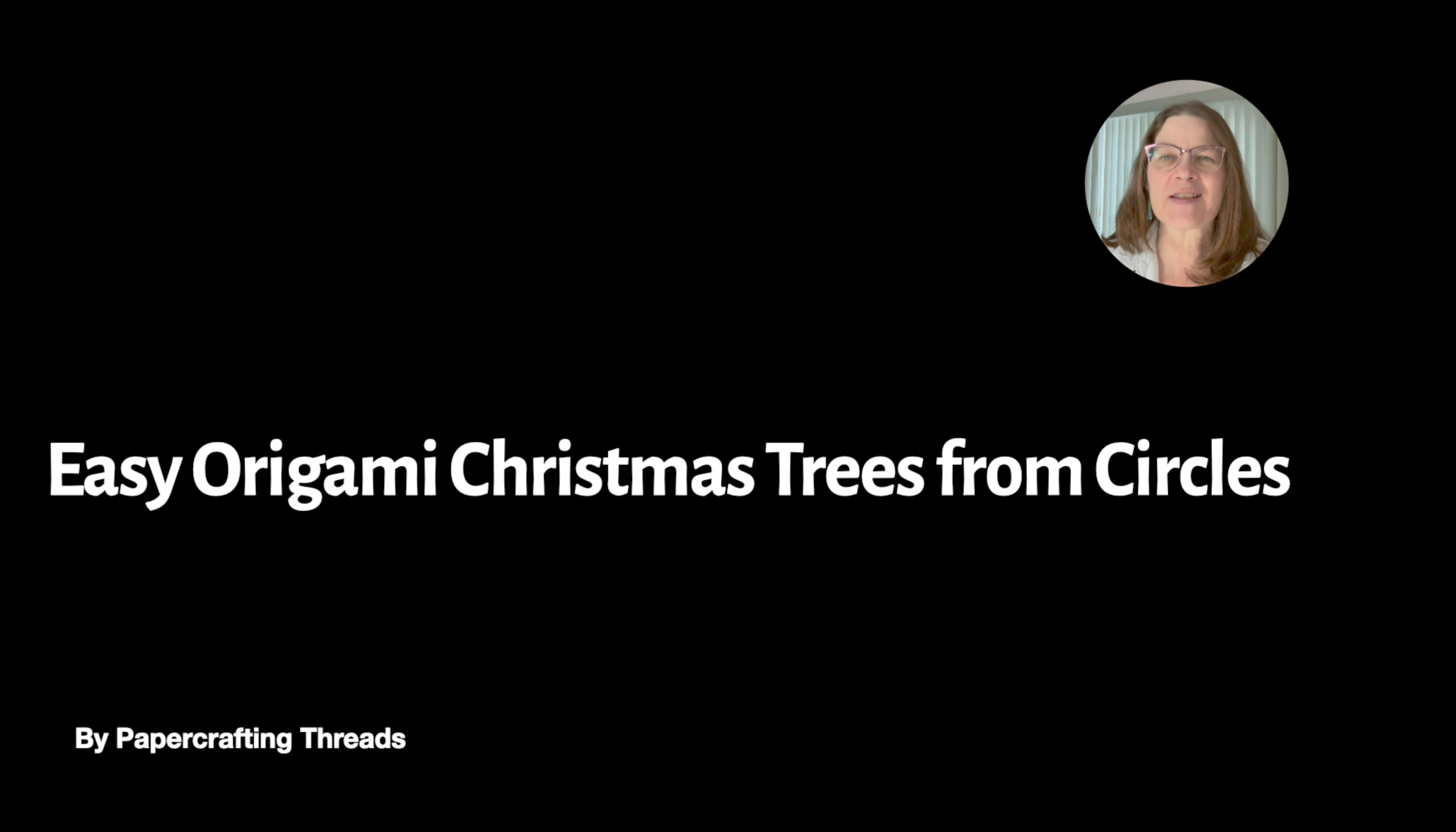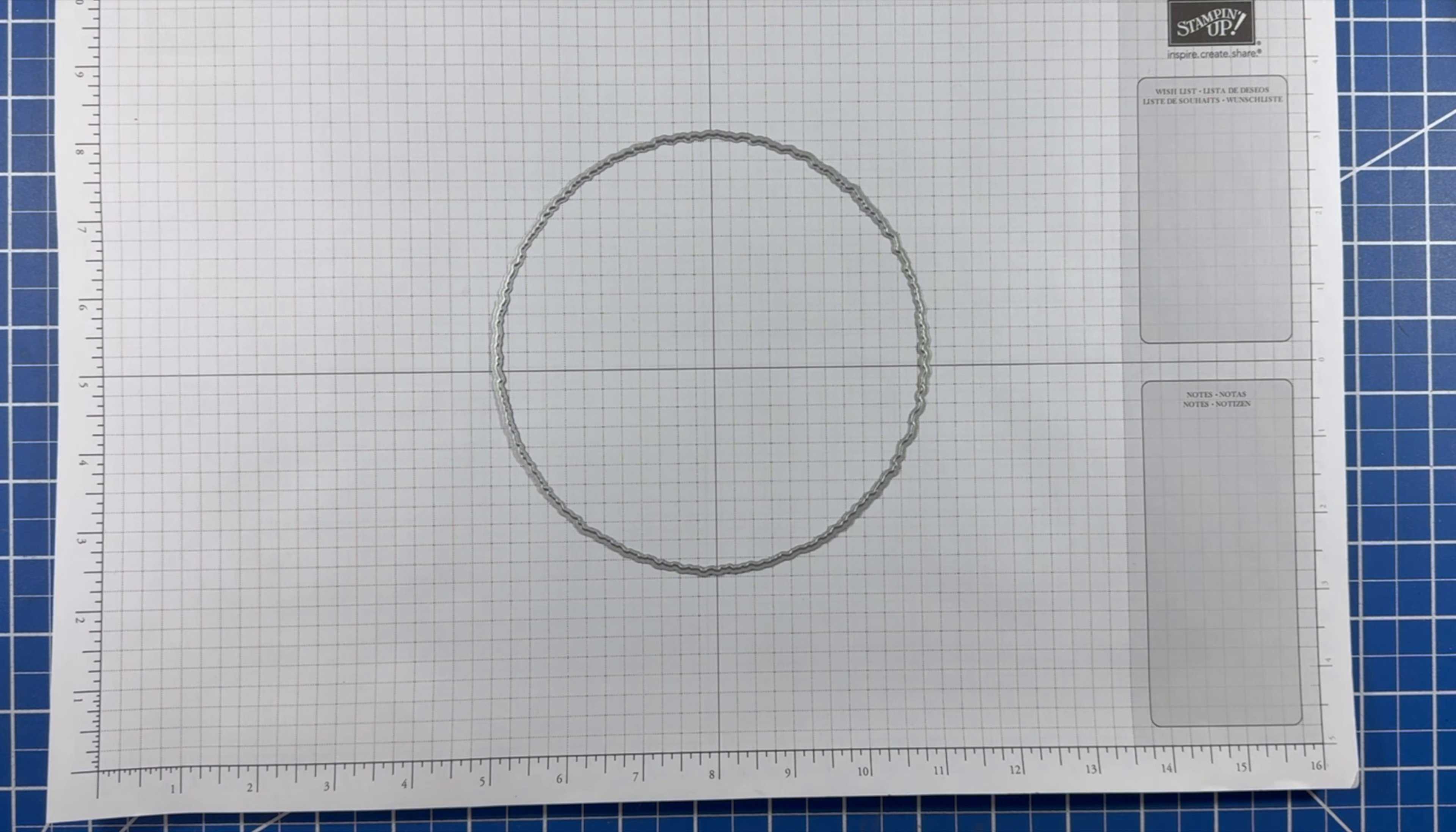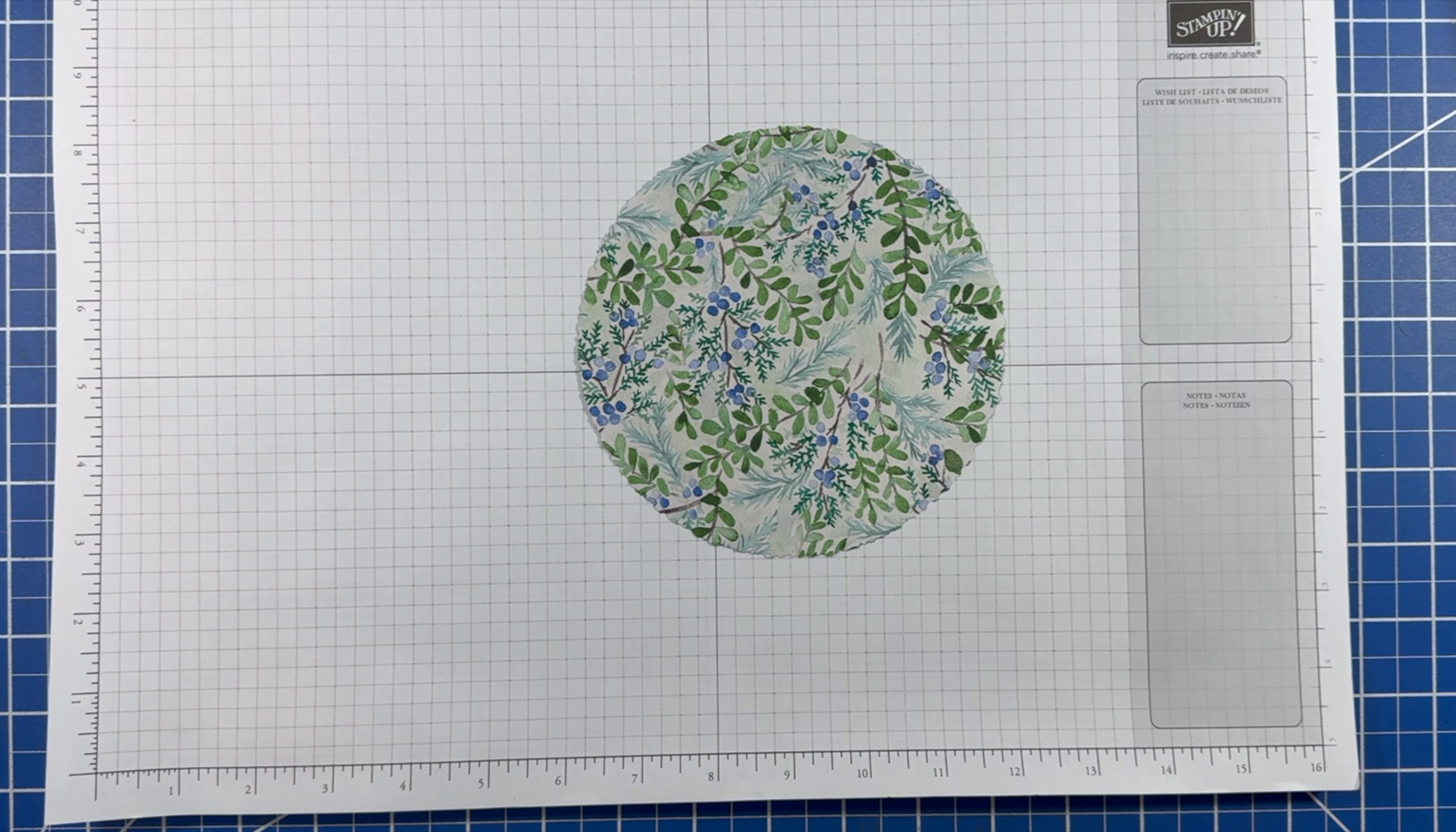I'm using the deckled circle dies to cut my circle. The largest die is about six inches across. I thought the deckled edges would look really great for this tree and I chose the winter meadow DSP for my paper. I cut a six inch square and die cut my circle.